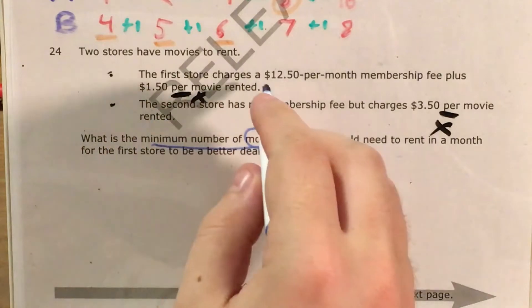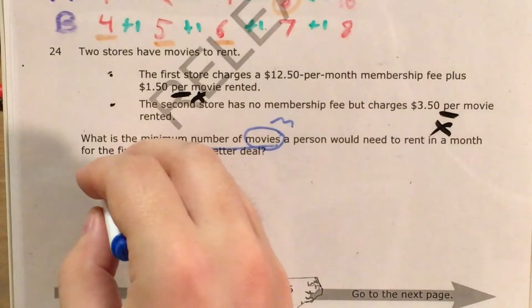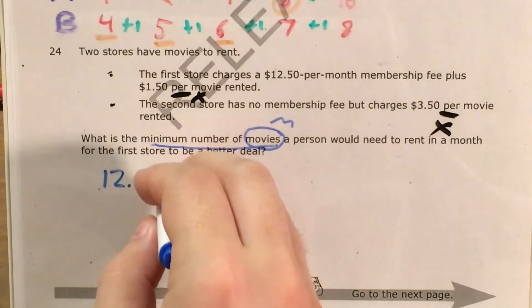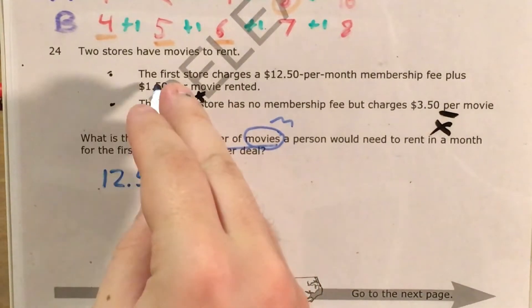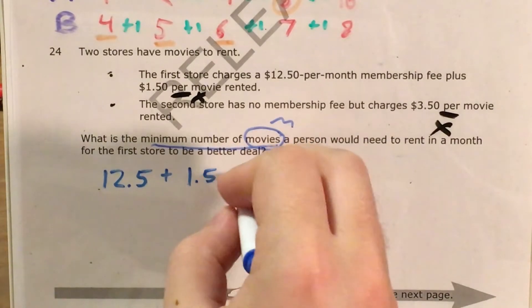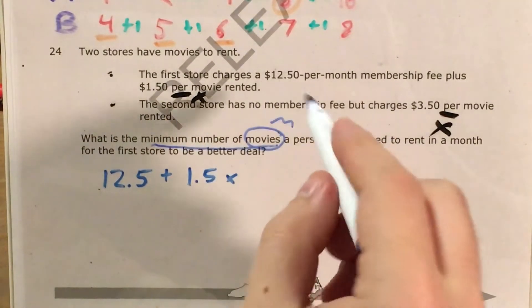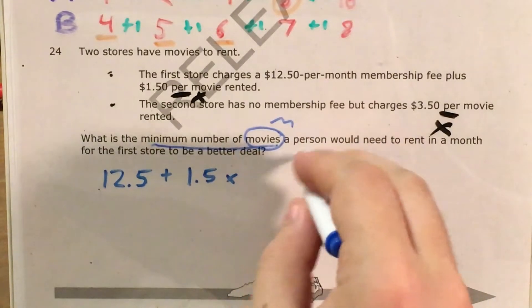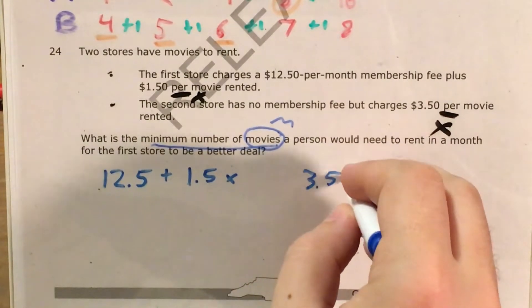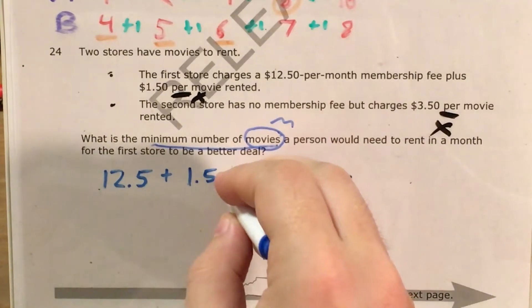For the first store, I have a membership fee which doesn't depend on the number of movies — that's $12.50 plus $1.50 per movie, so $1.50 times m. For the second store, they have no membership fee but charge $3.50 per movie, so $3.50 times m. I just realized I wrote x instead of m — my apologies.